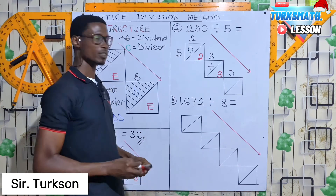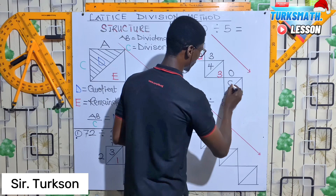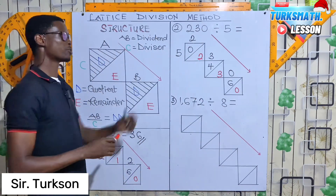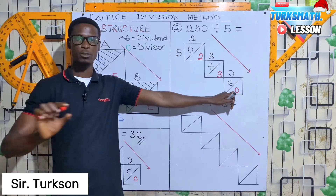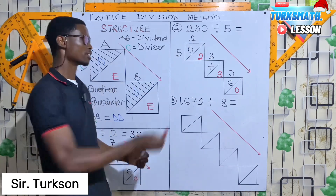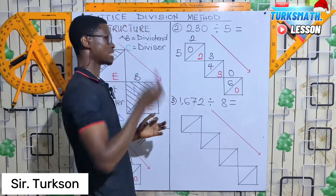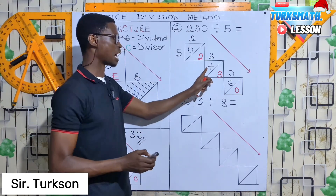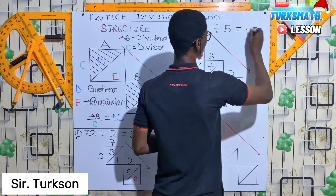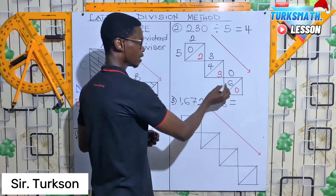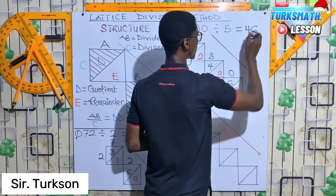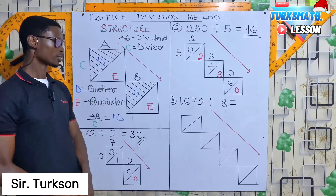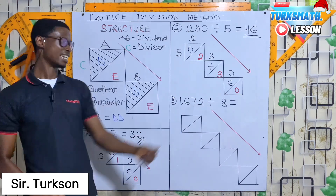How many 5s can we get in 30? That is 6, remainder 0. Now we read the quotient from the upper part. The first upper value is 0 — we don't write it when it begins with zero. The second upper value is 4, and the third is 6. Therefore, 230 divided by 5 is equal to 46. Now let's look at Example 3: 1672 divided by 8.